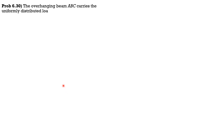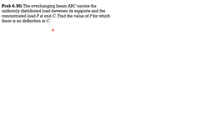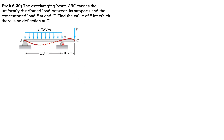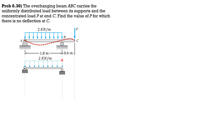Problem 4: The overhanging beam ABC carries a uniformly distributed load between its supports and a concentrated load P at its end. Find the value of P for which there is no deflection at C. The expected elastic curve should show no deflection at C. We split into a simply supported beam BCD with the UDL and a couple P × 0.6 at B, plus a cantilever loaded with P.